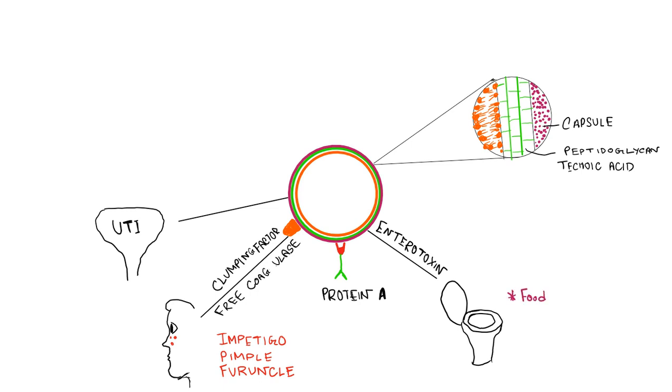It is a preformed toxin, so the incubation period is also very short, 1 to 6 hours. It is responsible for staphylococcal food poisoning, which is characterized by nausea, vomiting, and occasionally diarrhea. It is transmitted through affected milk products and bakery food. The most common source is the food handler. It is a super antigen and produces cytokine storm.